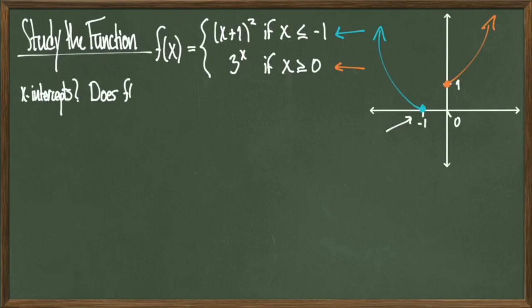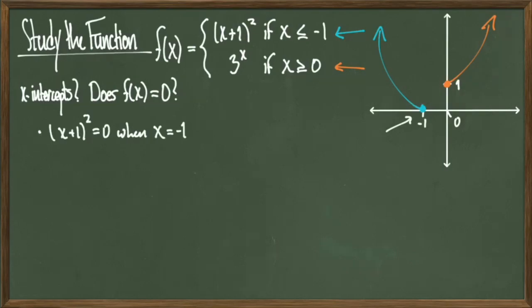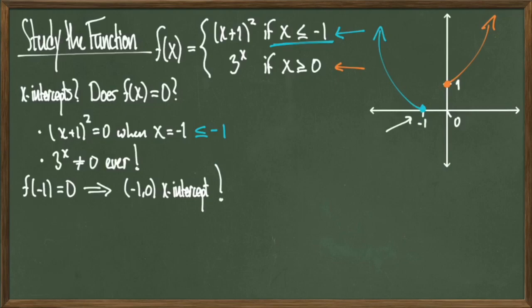The first question we'll answer about this is: does this piecewise function have any x-intercepts? In other words, does f of x ever take on the value zero? Visually, we can see that the blue curve on the left is touching the x-axis, which leads us to believe it is possible to take on the value zero. It looks like the blue curve, x plus one squared, is touching the x-axis at x equals negative one. We can test that: x plus one squared does in fact equal zero when x equals negative one. We also notice that three to the x never equals zero in this context. So f of negative one equaling zero is our only x-intercept, and that point is negative one, zero.